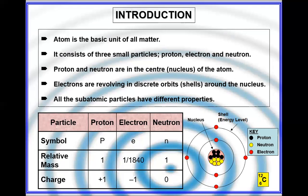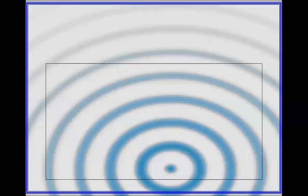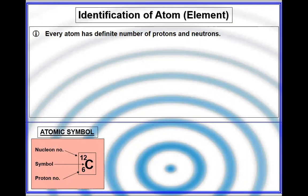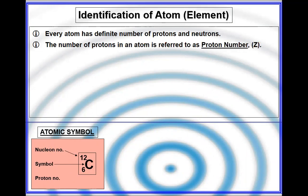Proton has mass 1, electron has mass 1 upon 1840 which is almost equal to 0, neutron has mass 1. Charge: proton is +1, electron is -1, and neutron is 0. This table is very important.